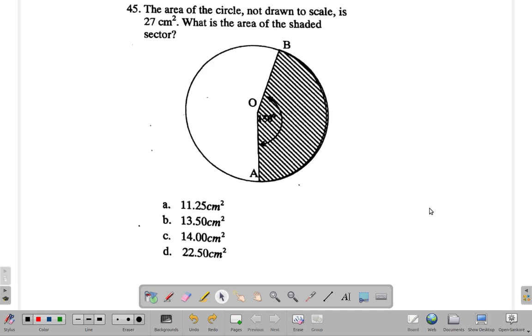45. Answer this and let me see what you have. Alright, good. What did you get? Let's see. It says the area of the circle, not drawn to scale, is 27 centimeters squared. What is the area of the shaded sector?